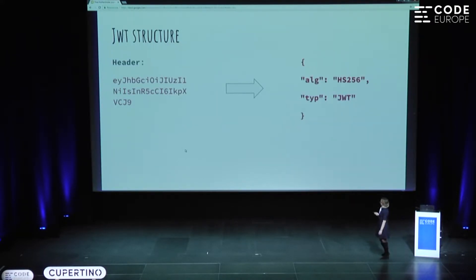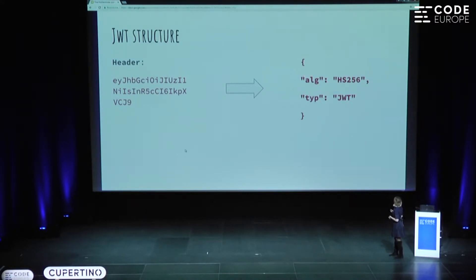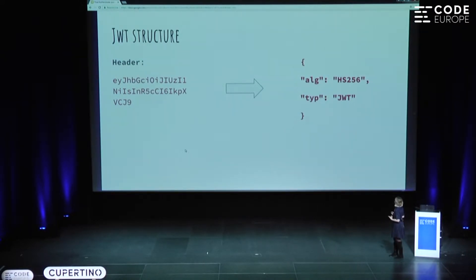The first part is the token's header. Every single token has a header which contains claims about itself, normally in the form of a JSON object. It contains things like the type of algorithm used for signing the token — here it's HS256 — and the type of token, which in our case is JWT.